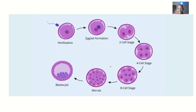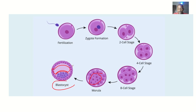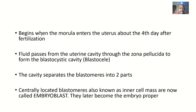Earlier on, we knew that the blastocyst is basically still a morula, just that this morula now has a fluid — it is filled up with fluid. Some inner cells are compacted to one portion of the cavity. The process begins when the morula enters the uterus, about the fourth day after fertilization. The morula is at the 16th- or 32nd-cell stage, and when it enters the uterus, the process of blastocyst formation begins.